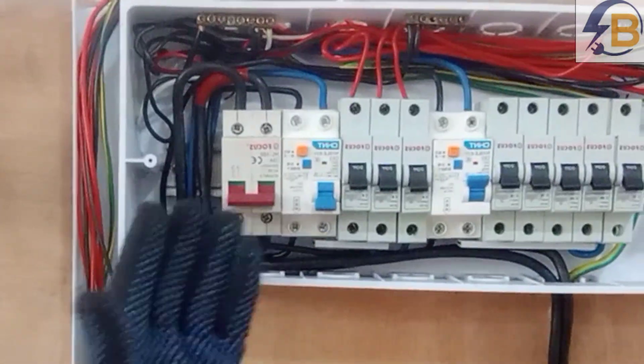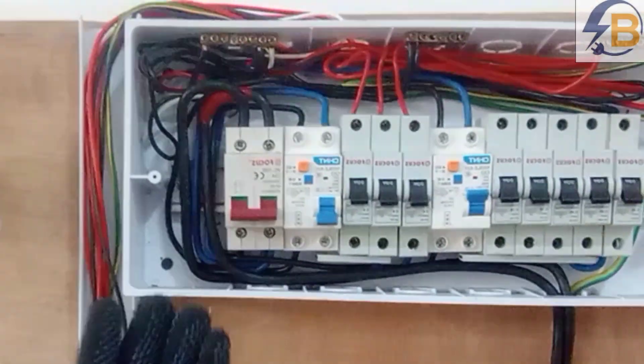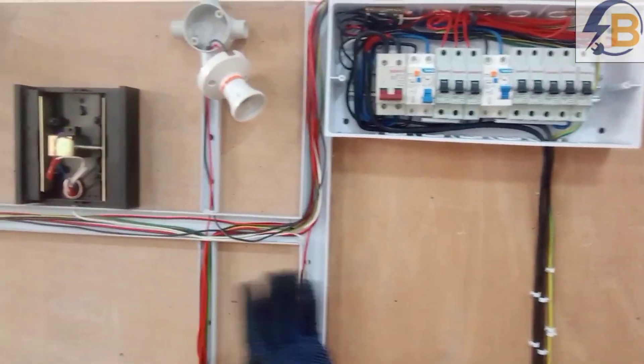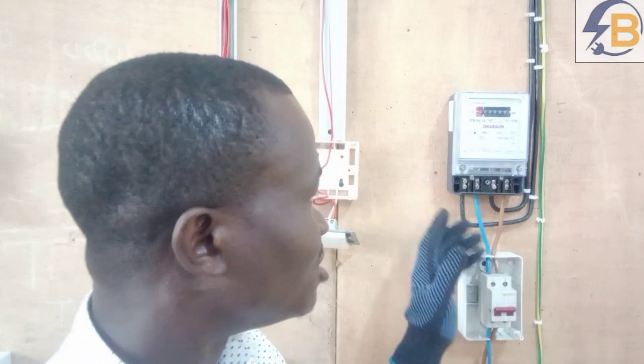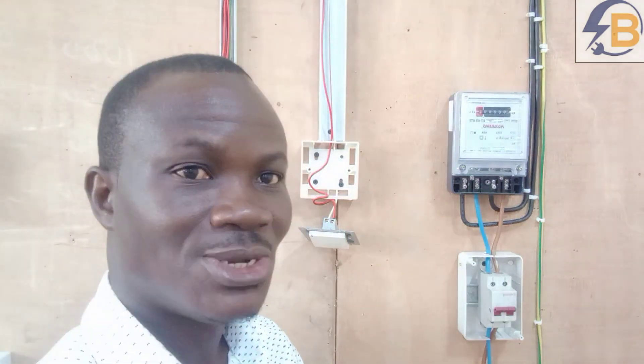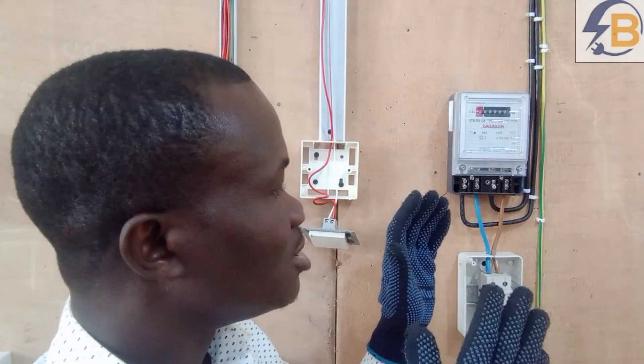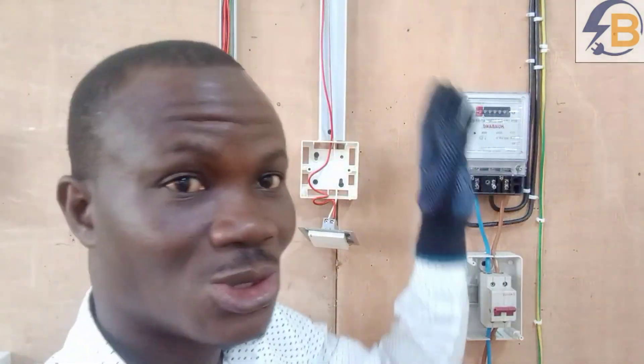In the consumer unit there is a point where the neutral must be connected and a point where the live must be connected. From the meter also, there is a point for neutral and a point for live going to the consumer unit. So we are going to do our final continuity test on the main supply cables to make sure that neutral is connected where neutral is supposed to be and live is connected where live is supposed to be.